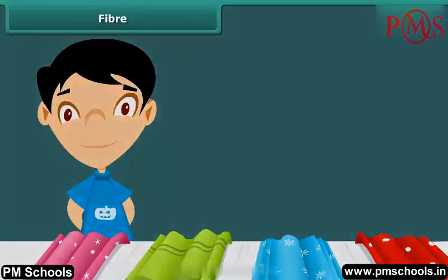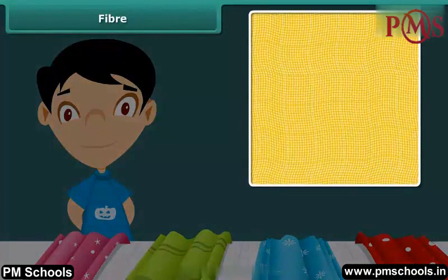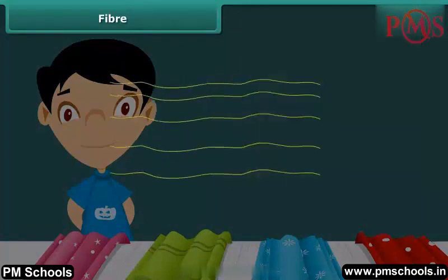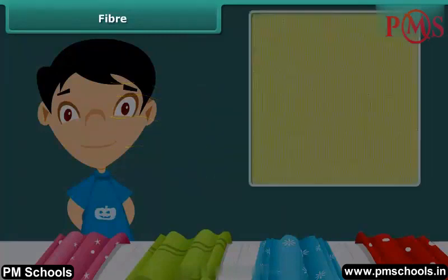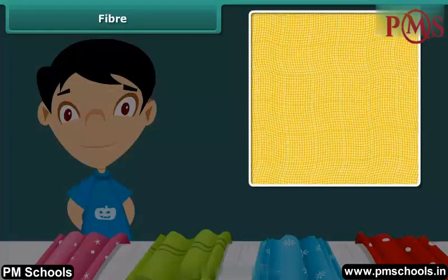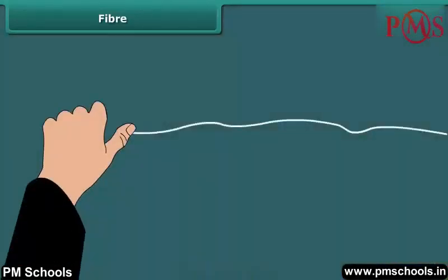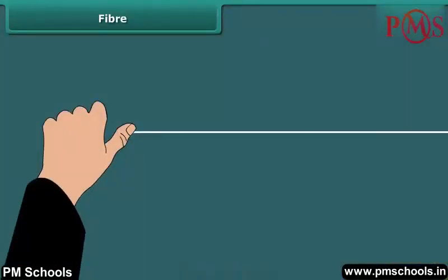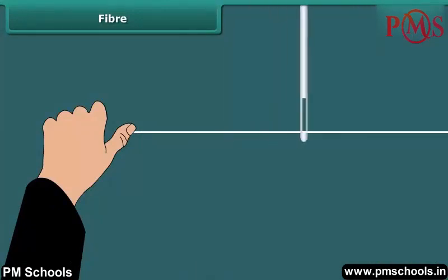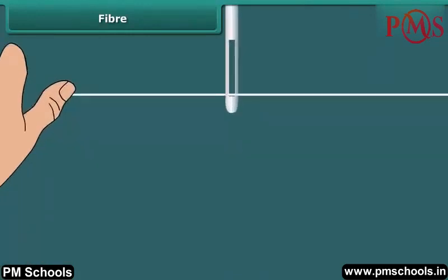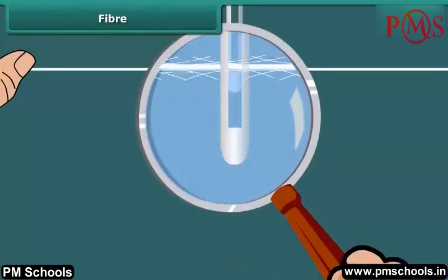Have you ever had a closer look at a fabric? You must have seen many yarns in it. These thin yarns are made up of still thinner strands called fibers. To understand this, take a piece of fabric and take out a yarn from it. Now press one end of the yarn with your thumb and scrub the other end along its length with a needle. You can see that the yarn splits into thin strands — these thin strands are fibers.